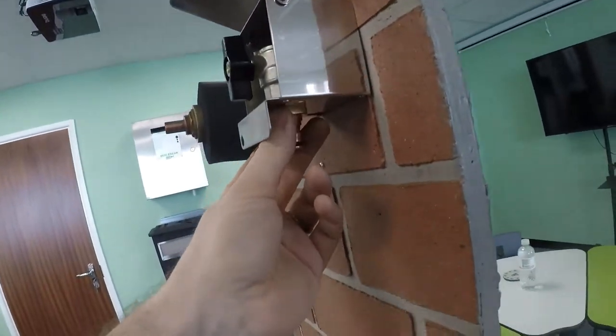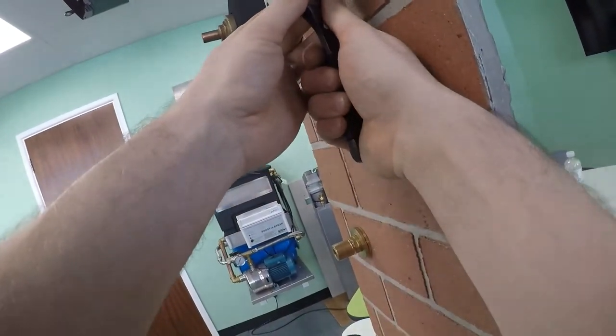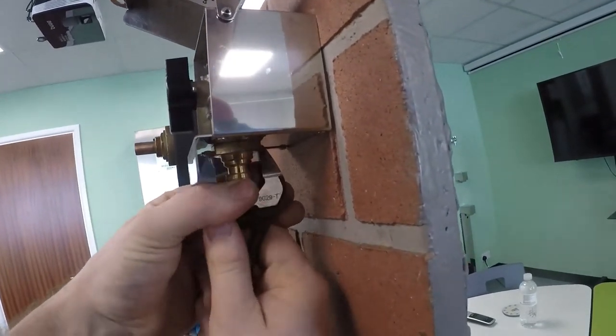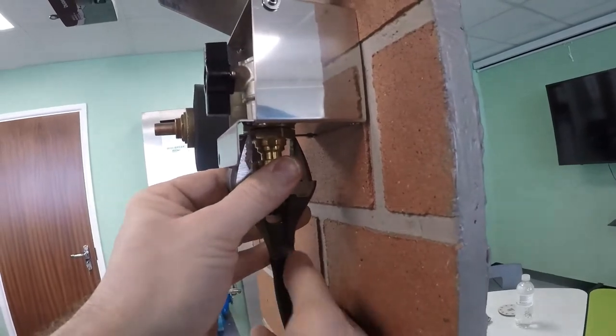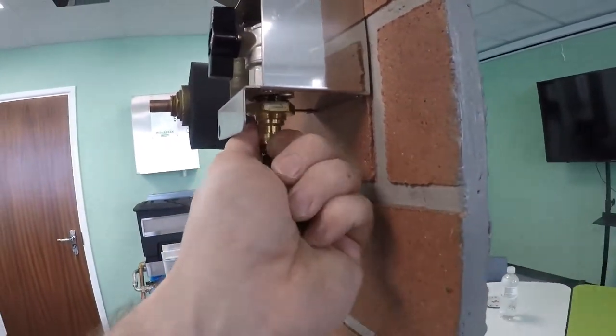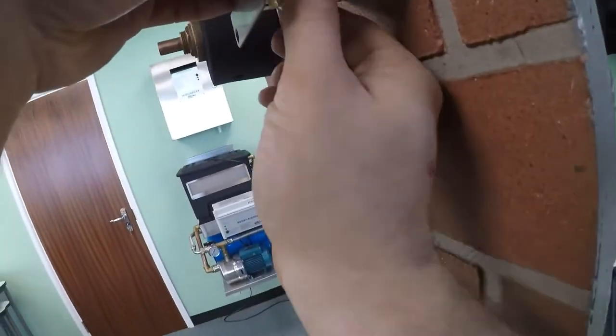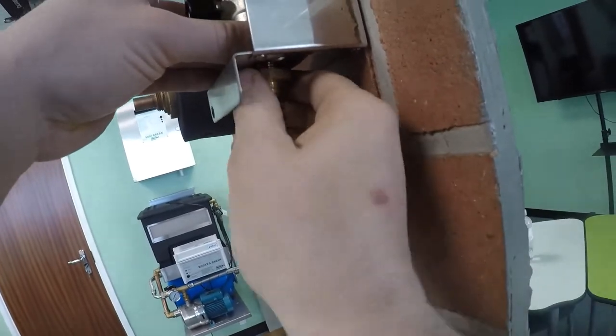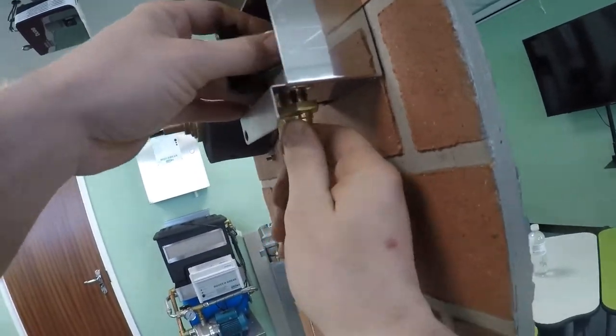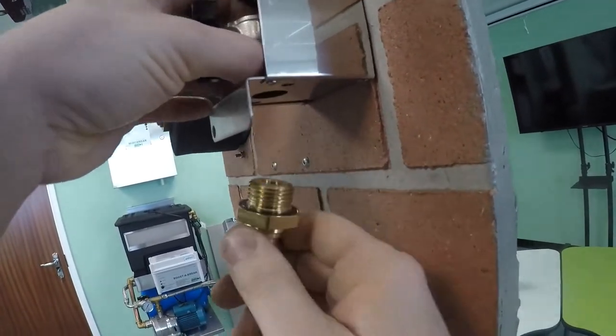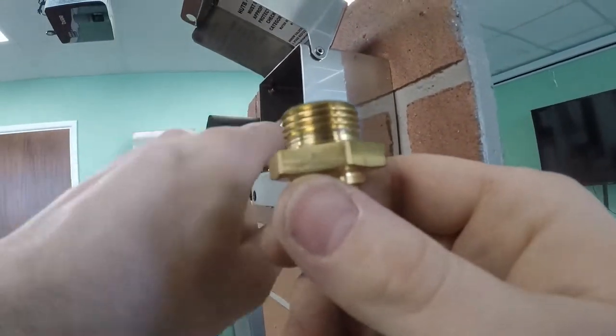Before we get to those, we're going to undo this part here. So I'm going to get that right. There's your hose connector. We get that out of the way. Connector on one side.